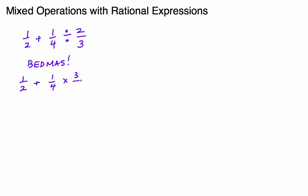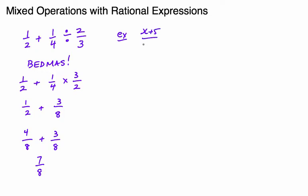So this question becomes one-quarter, and instead of dividing it multiplies by the reciprocal, so I get one-half plus three-eighths. Now I have to use my adding and subtracting fractions skills to get equivalent denominators. I know that the answer is in eighths and there are seven-eighths.